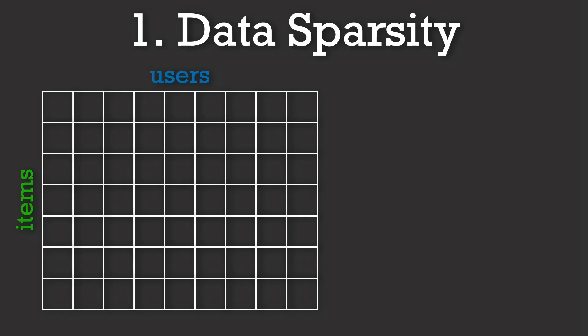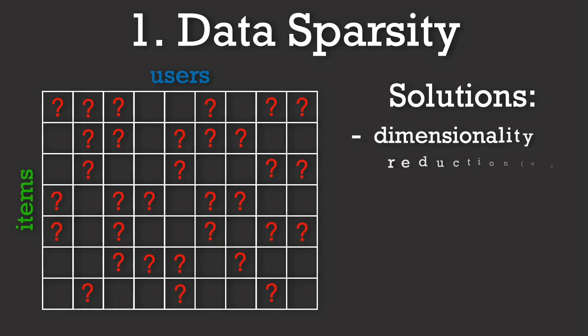Let's start with data sparsity. As we discussed in the last video, real-world user item matrices are often extremely sparse, and most users interact with only a tiny fraction of available content. This makes it hard to accurately predict preferences. One effective approach here is to apply dimensionality reduction techniques, like matrix factorization, which we touched on in our collaborative filtering video.